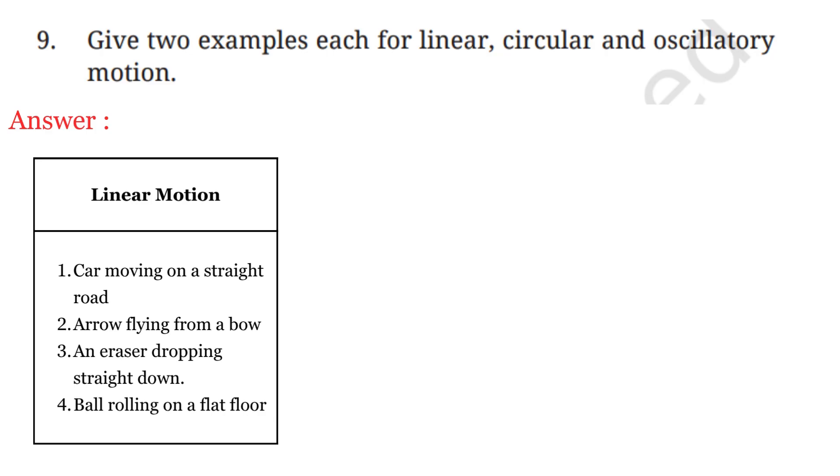Examples of linear motion are car moving on a straight road, arrow flying from a bow, an eraser dropping straight down, ball rolling on a flat floor.